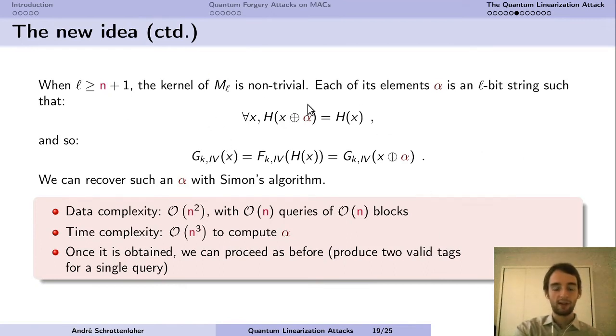Anyway, there is a period here because this H was an affine function. And so even when you post-process by the function F, you still have a periodic function. And we can recover this period using Simon's algorithm. The only change is that the data complexity has increased because now each of our queries contains a linear number of blocks. So instead of having a data complexity of the order of n, we have order of n squared. But once we have obtained this period alpha, then we can, as before, we can make queries and produce two valid tags for each query we make. So this is again a break of the plus-one unforgeability.